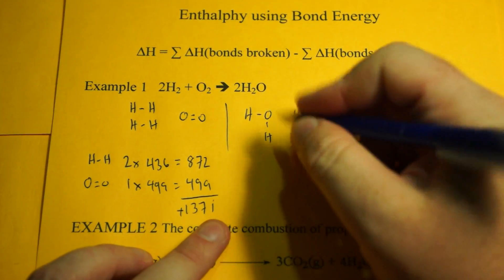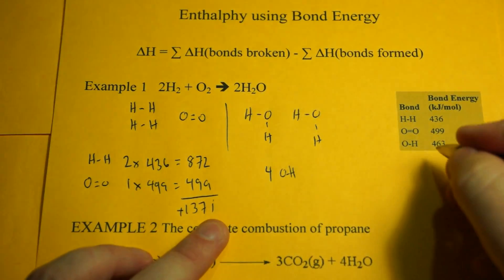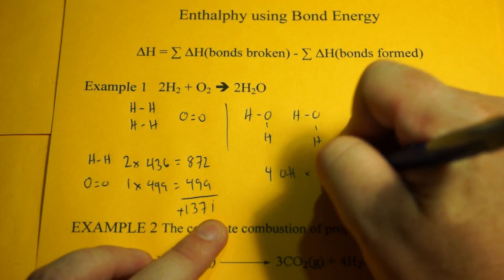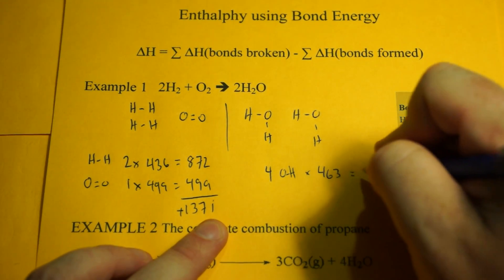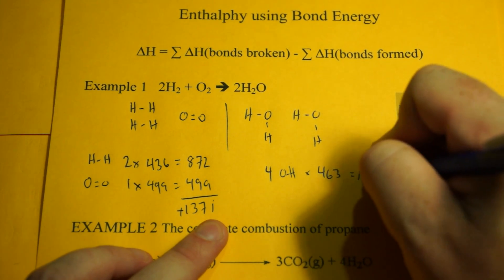Now this side is going to be your negative part. So we have 1, 2, 3, 4 OH bonds. So 4 times 463, and that comes out to 1,852.